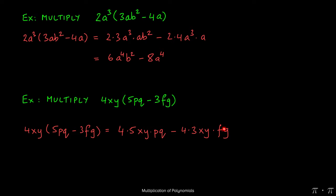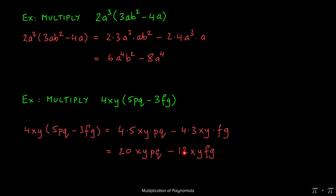You'll notice here that the properties of exponents don't apply to any of these terms because none of them have a like base. So all we have to do is multiply 4 and 5 to get 20, multiply negative 4 and 3 to get negative 12, and the problem is over. There's nothing else we can do at this stage.